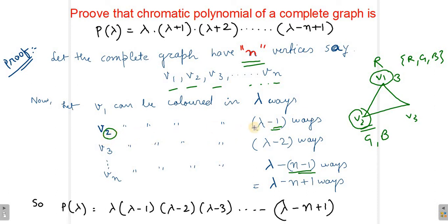So the last vertex vn will be colored in lambda minus n plus 1 ways. So the chromatic polynomial of a complete graph will be the product of all these - that is lambda times lambda minus 1 times lambda minus 2 times lambda minus 3 up till lambda minus n plus 1.